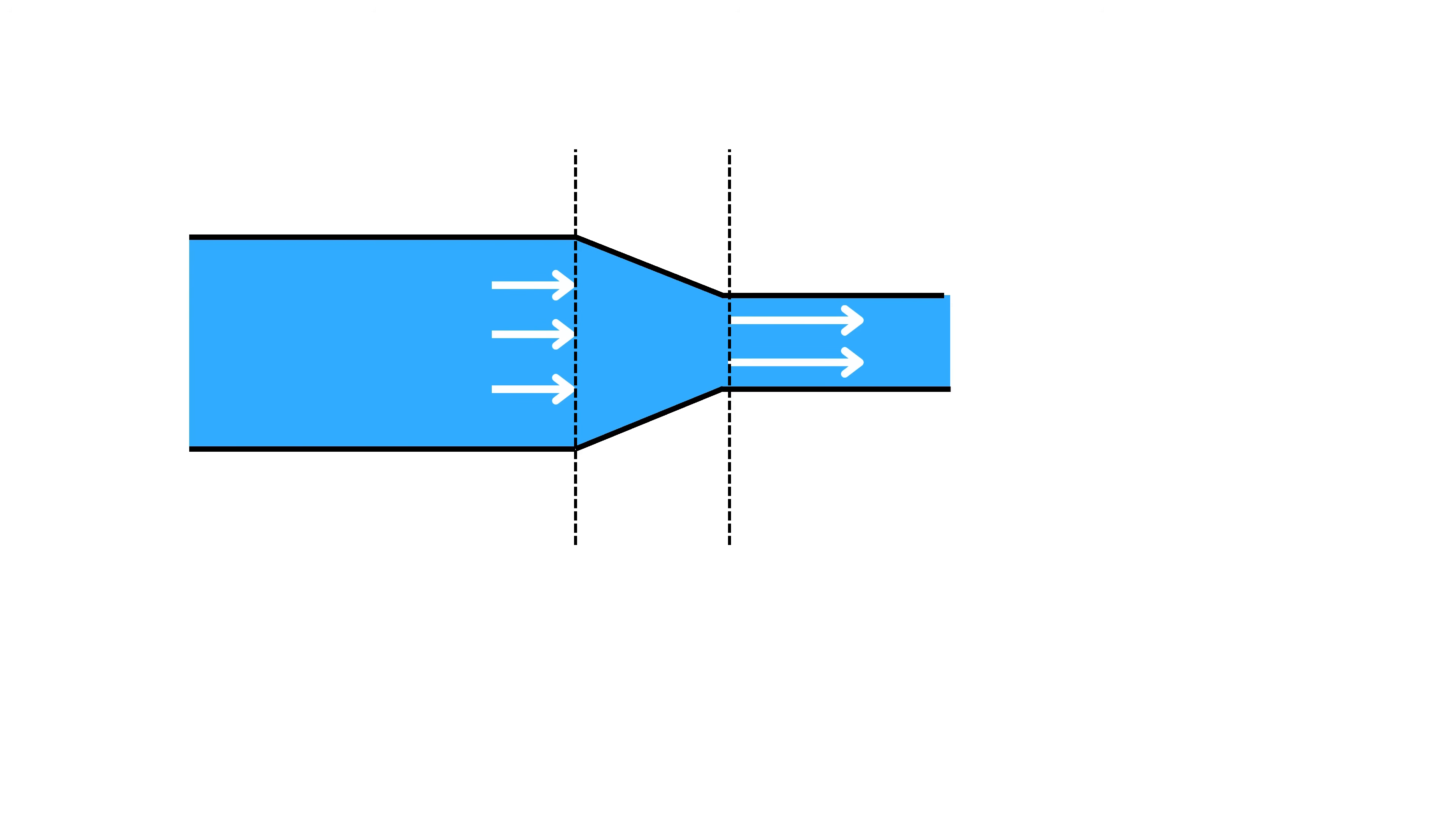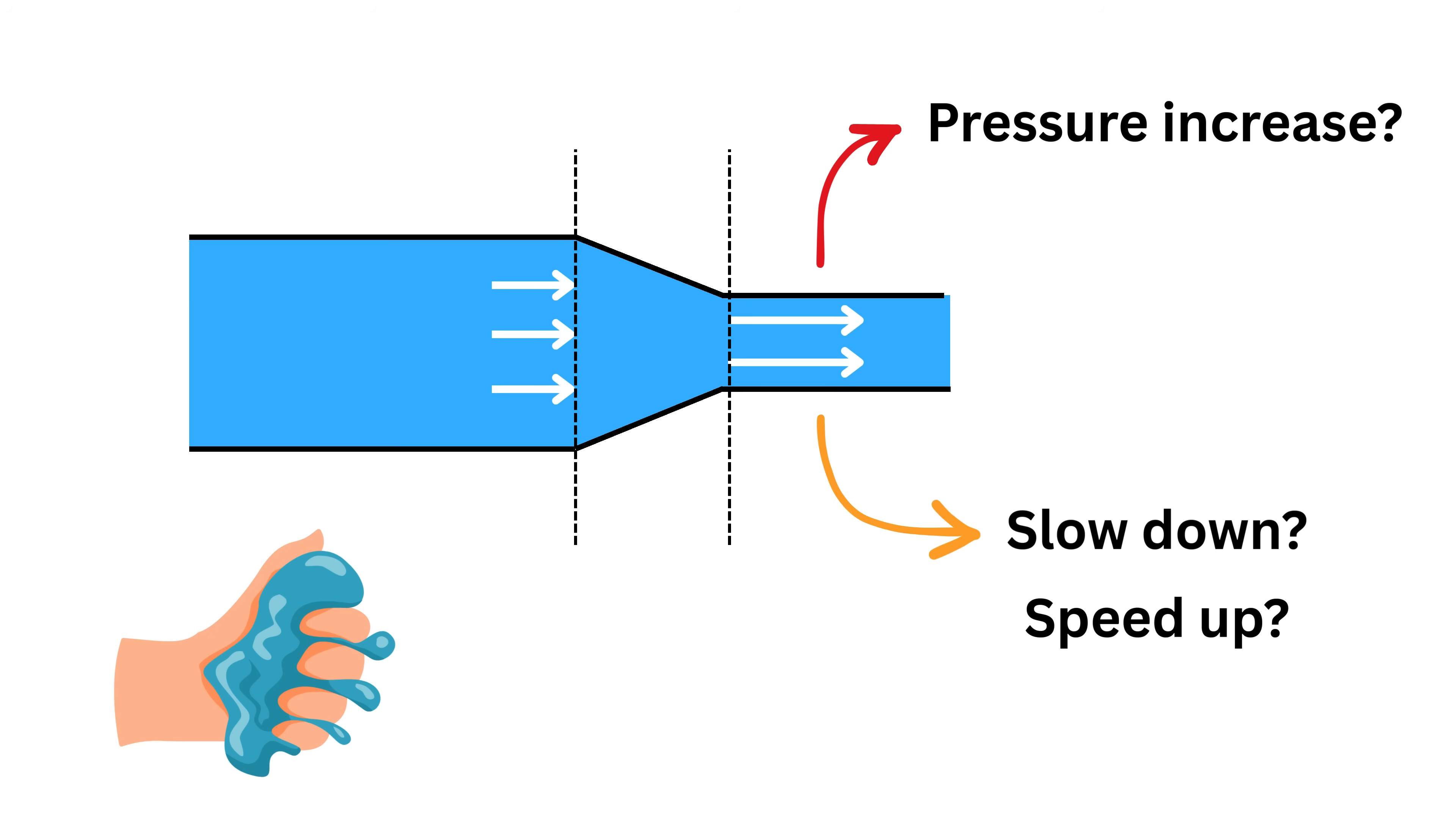Then what happens to a fluid when it flows through the narrow portion of this tapering pipe? Does it slow down or speed up? Does the pressure of the fluid increase because it's being squeezed here? Or does something else happen?